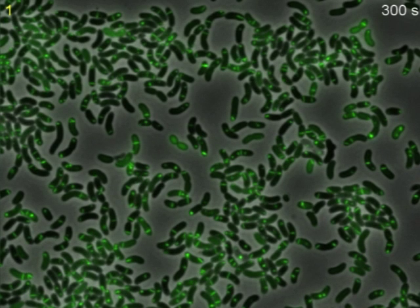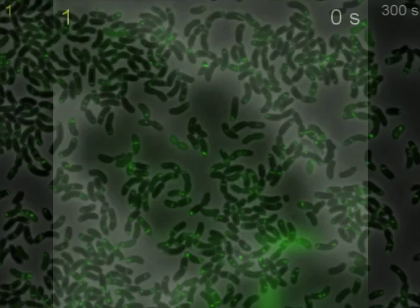By tagging one of the proteins of the system with GFP, we discovered that in live cells, the type 6 secretion appears as an elongated structure that first assembles, then rapidly contracts and finally disassembles.